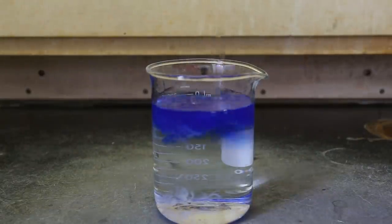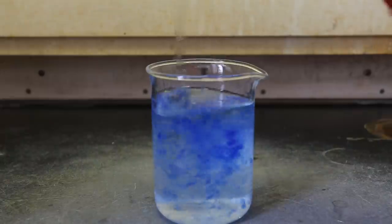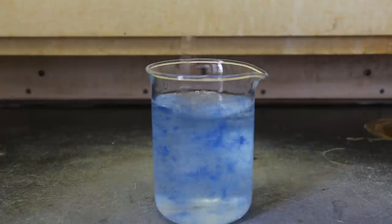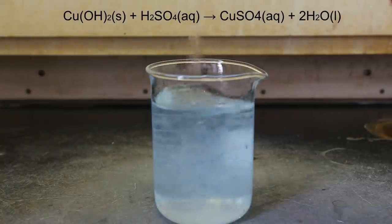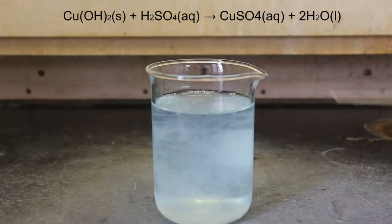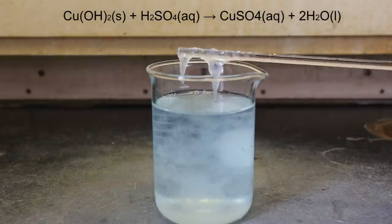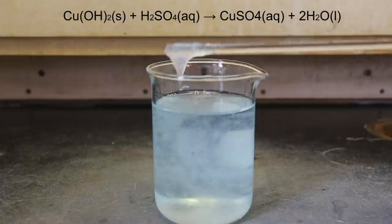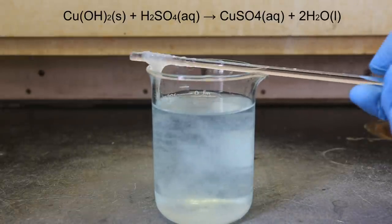Upon thorough mixing, the dark blue color of the Schweizer reagent disappears. Eventually, the cotton becomes completely white and the solution takes on a very slight blue color. The sulfuric acid reacts with the ammonia hydroxide and the copper hydroxide according to the reaction shown above. The reaction between ammonium hydroxide and the sulfuric acid produces ammonium sulfate, which is colorless when dissolved in solution. However, when copper hydroxide reacts with sulfuric acid, it produces copper sulfate, which is a blue color in solution like you saw earlier in the video.